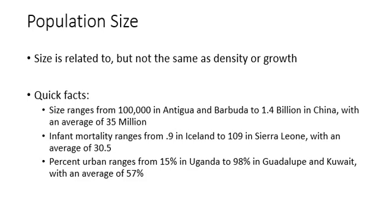When we look at levels of urbanization, Uganda has the lowest, being the most rural country with only 15% of its population living in an urban area, while city-states like Guadalupe and Kuwait have some of the highest levels of urbanization at 98%. The global average is 57%.